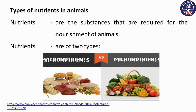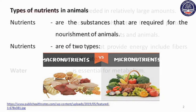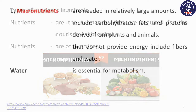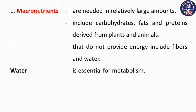Nutrients are the substances that are required for nourishment of animals. Nutrients are of two types. Macronutrients are those that are needed in relatively large amounts.